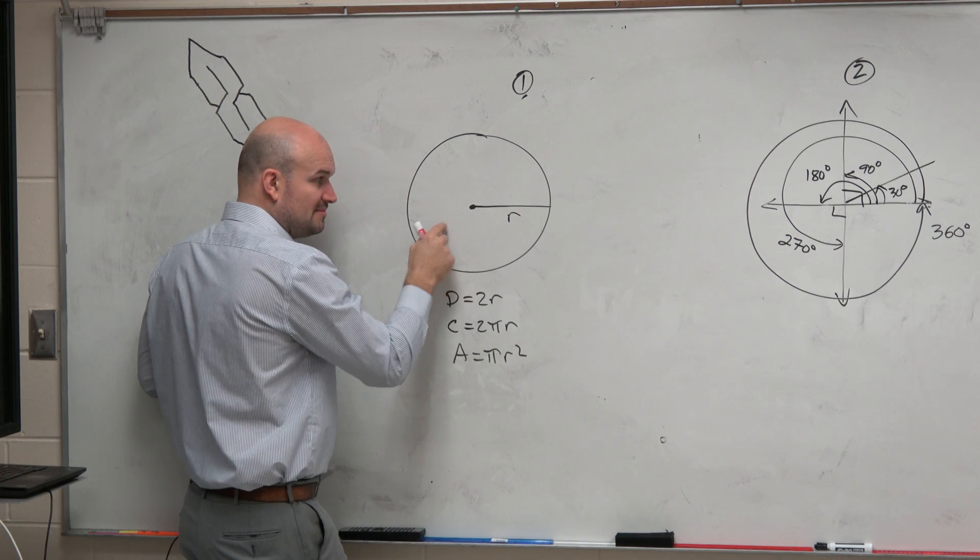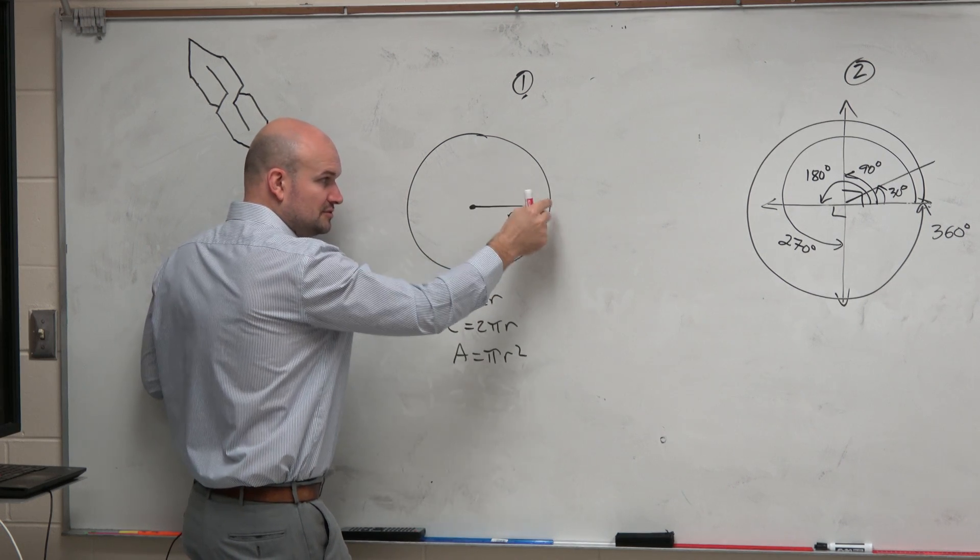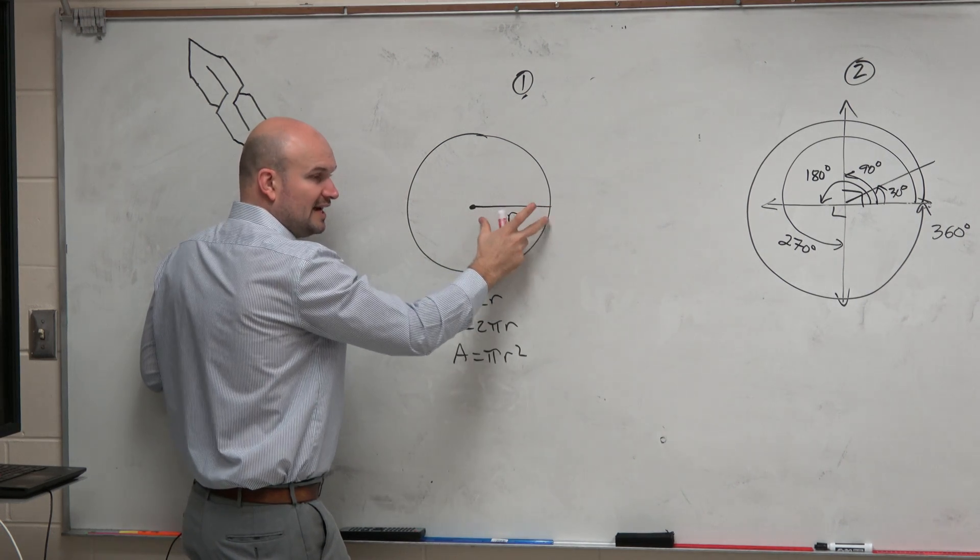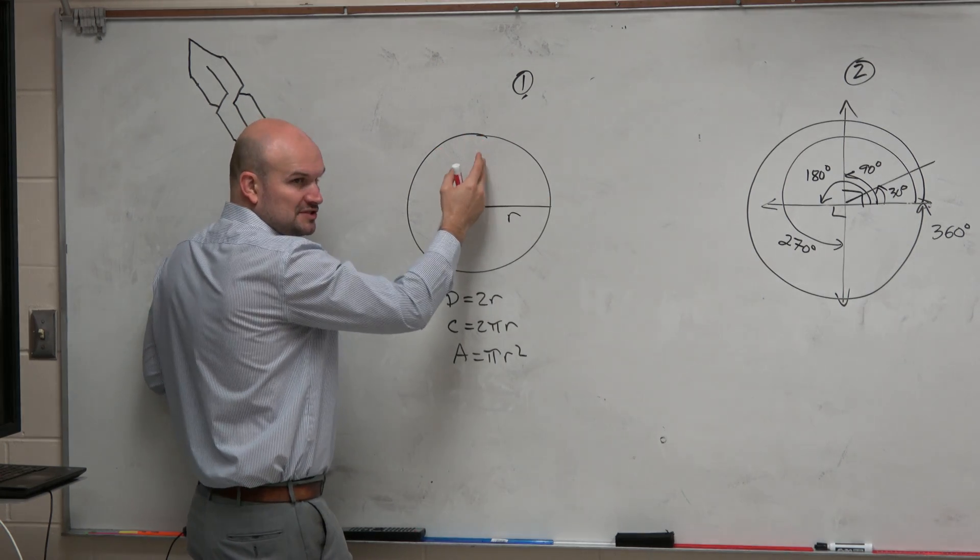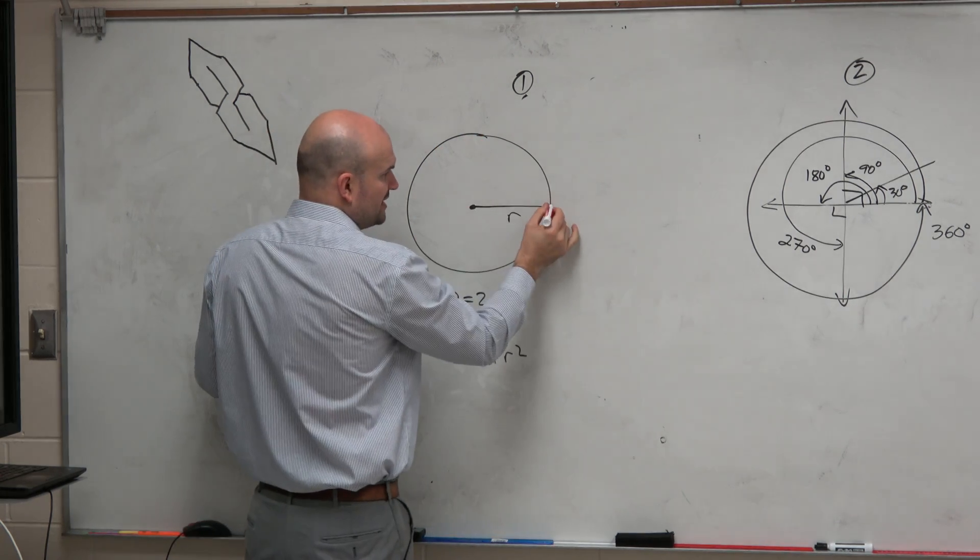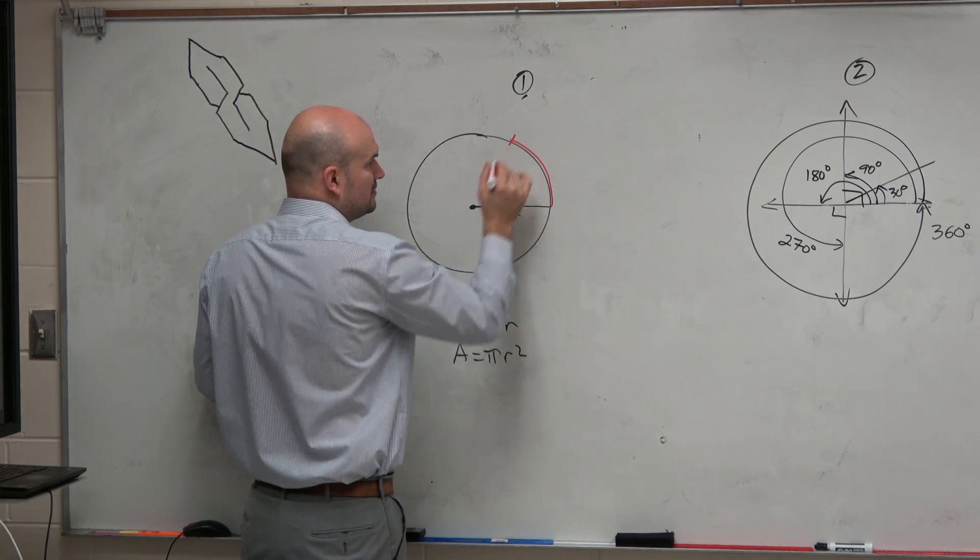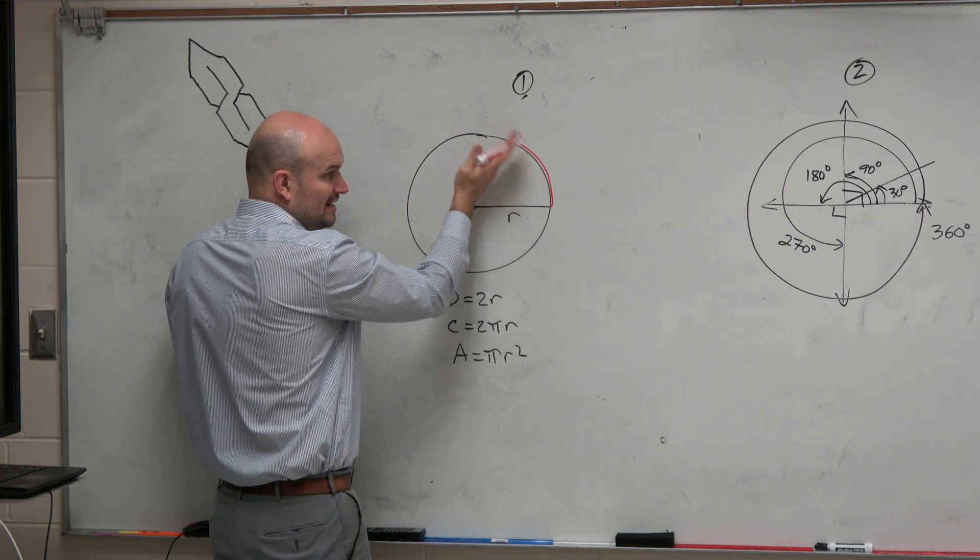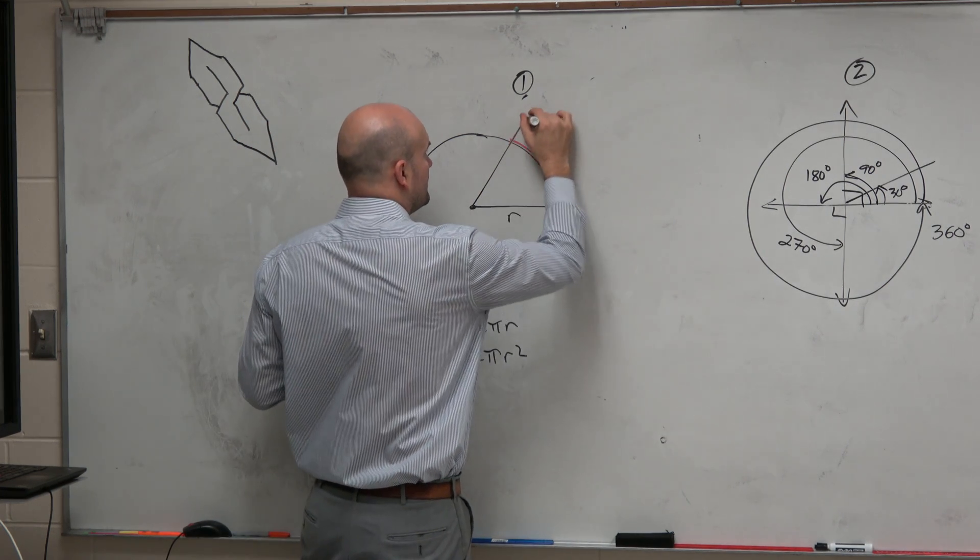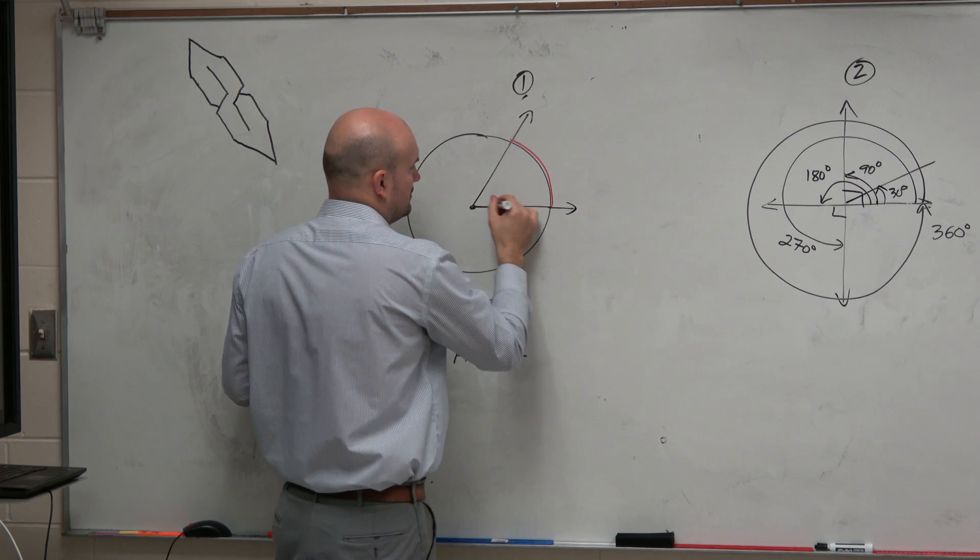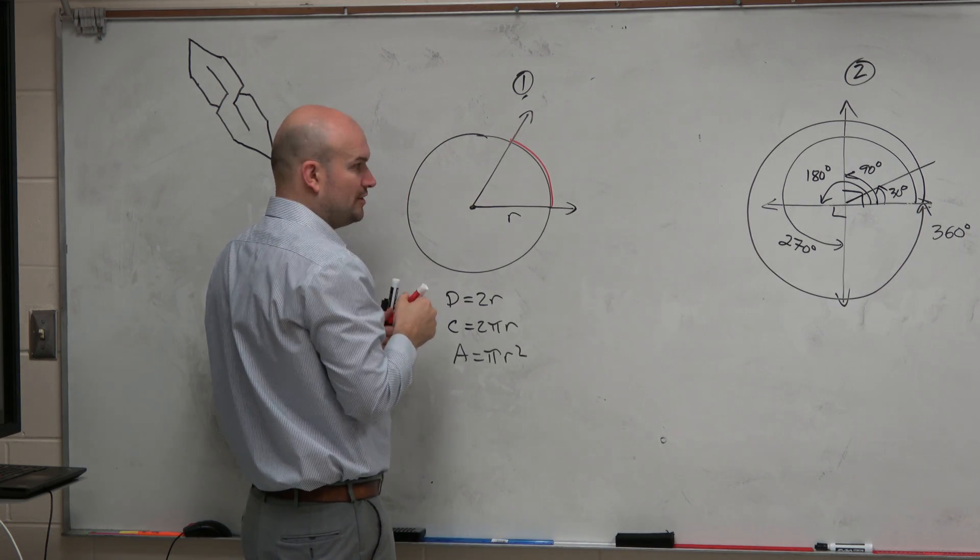So the radius is the measurement from the center of the circle to any point on the circle. If I kind of drop that radius in hot water, I can kind of wrap it around the circle. And if I took this radius and wrapped it around the circle and rotated that radius to create two rays, I would now have created an angle that we refer to as one radian.